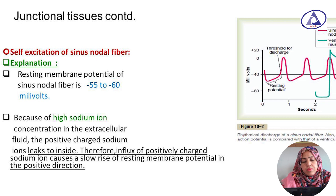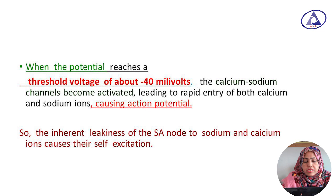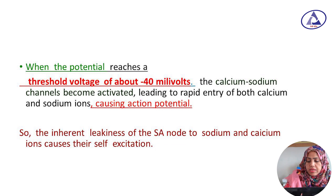Therefore, the influx of positive charge sodium ions causes a slow rise of the resting membrane potential in the positive direction. When the potential reaches a threshold value of about minus 40 millivolts, the calcium-sodium channels become activated, leading to rapid entry of both calcium and sodium ions, causing the action potential. Thus, inherent leakiness of the SA node to sodium and calcium channels causes self-excitation.